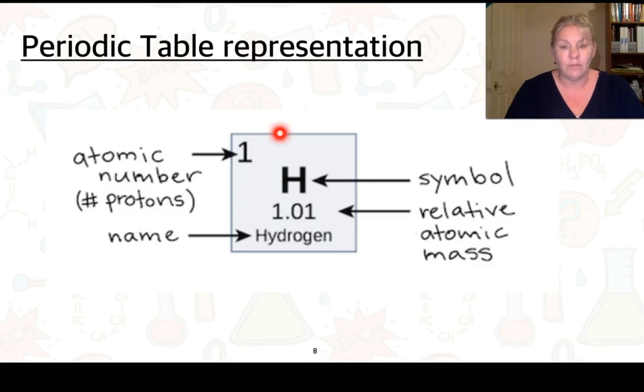Here's a little representation of just one of those boxes off of the periodic table. So here we have element H, which is hydrogen, and it has an atomic number, so therefore the number of protons, of 1. And it has a relative atomic mass of 1.01. We'll explain later how we get that 1.01, and it's to do with isotopes, so that's something we'll look at after.